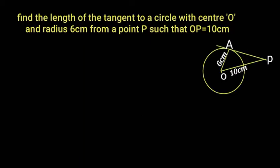Problem solving. Find the length of the tangent to a circle with center O and radius 6 cm from a point P such that OP is equal to 10 cm.